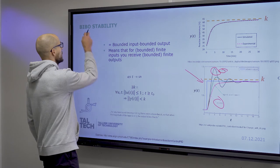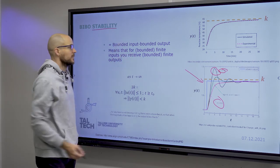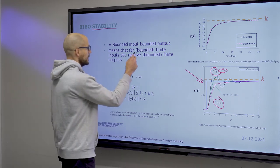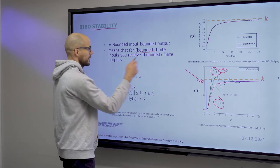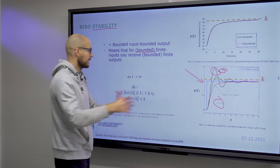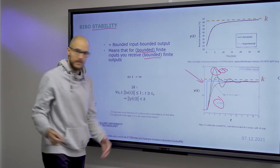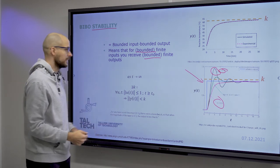And stability, more specifically bounded input, bounded output type of stability means that for any finite input, so bounded, not infinite, you receive likewise a bounded finite output.